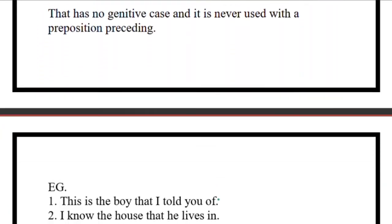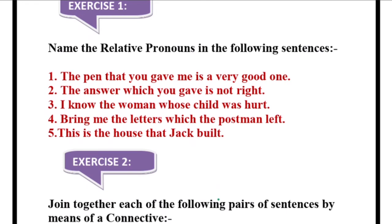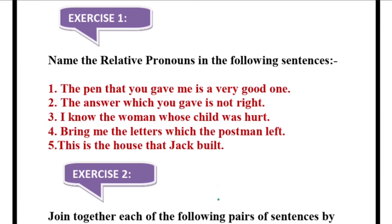Now we will directly move to the exercise. Exercise one: name the relative pronouns in the following sentences. 'The pen that you gave me is a very good one' — identify the relative pronoun: 'that' — because we are using this word to identify the pen, and the pen is a non-living thing so we join with 'that.' Second: 'The answer which you gave is not right' — non-living thing, joining with 'which.' Third: 'I know the woman whose child was hurt' — a living thing, joining with 'whose.'